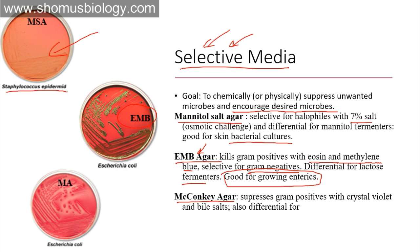MacConkey agar suppresses gram-positives using crystal violet and bile salts, and is also differential, particularly for E. coli and coliforms. Like EMB, MacConkey agar kills gram-positive bacteria and allows only gram-negatives to grow. While EMB can support growth of all types of enteric bacteria, MacConkey agar is specifically used for E. coli and coliform bacteria. All these media we discussed — mannitol salt agar, EMB, and MacConkey — are selective media whose goal is to chemically suppress unwanted microbes and encourage desired ones.